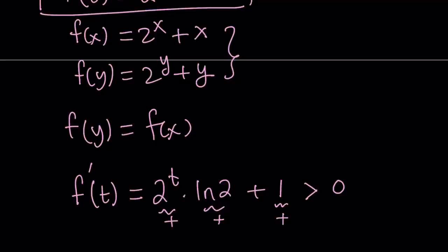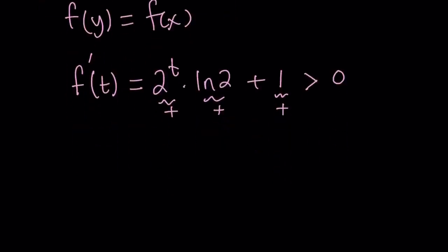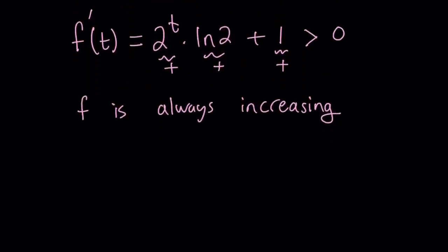So, we have the derivative which is positive. What is that supposed to mean? As you know, with functions, it means that f is increasing. But since this is true for all values of t, f is always increasing. Great. And later on, I'm going to show you what the graph of f looks like.